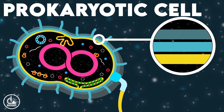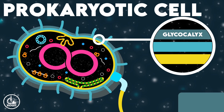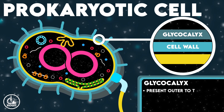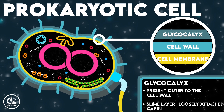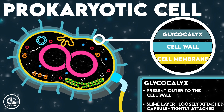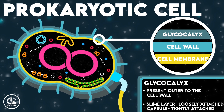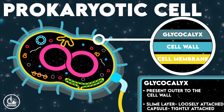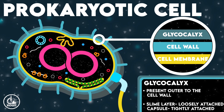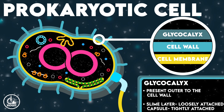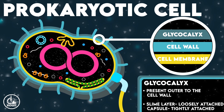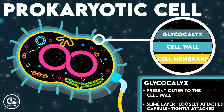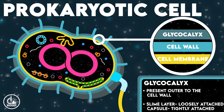The outermost layer of the cell envelope is called glycocalyx, which is made up of polysaccharides. If this layer is loosely attached to the cell, it is called slime layer, and if it is tightly attached, it is called capsule. A cell has either a slime layer or capsule depending on its habit and habitat.